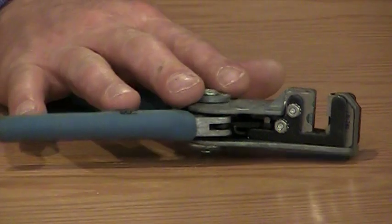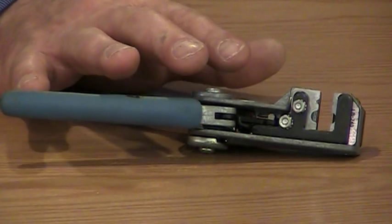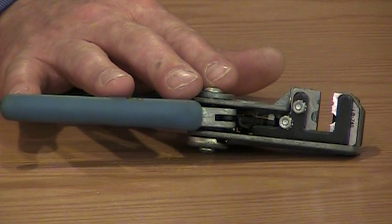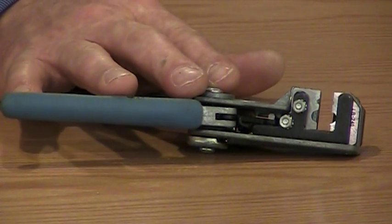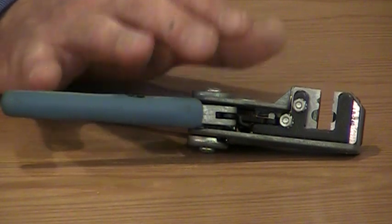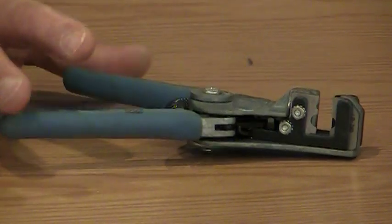These Stripmaster tools have been around a long time. We've been making the basic frame for probably 50 plus years. We sell them to strip all kinds of wire, but these are made to strip coax. You can get it for RG6 or RG59 or whatever you need, and specifically to do what they call a two-step strip for F connectors.